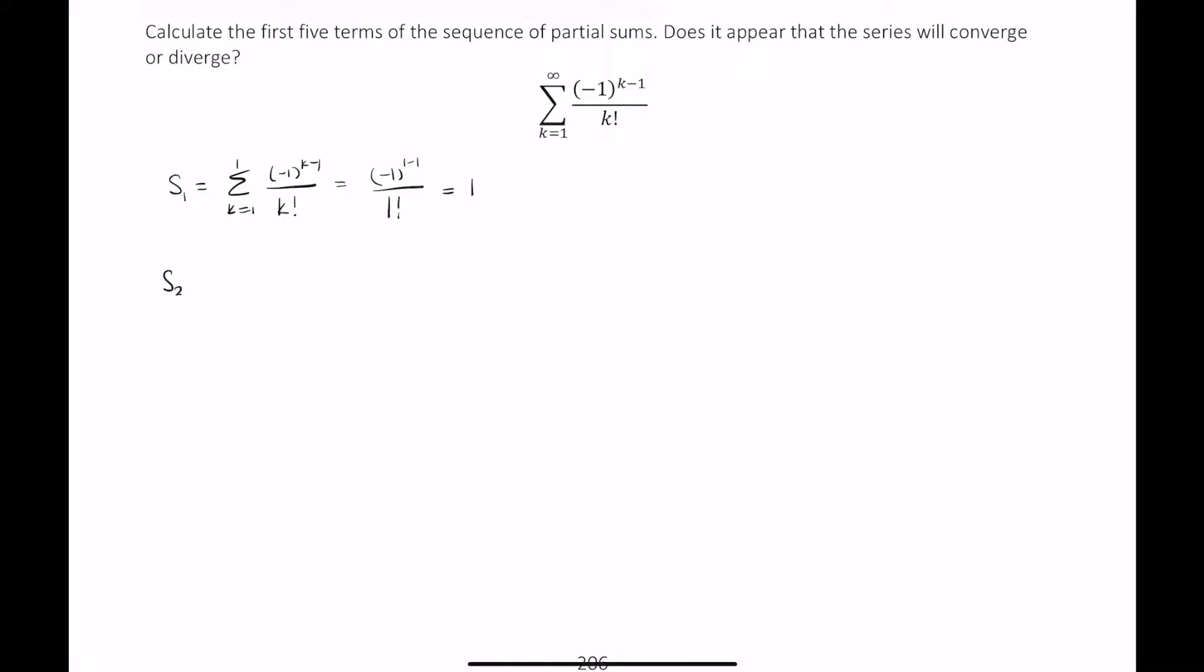Okay, so let's find S₂, the second partial sum. Well, this is the finite sum beginning from k equals 1 and ending at k equals 2 of (-1)^(k-1) over k factorial.